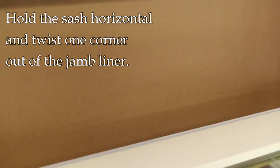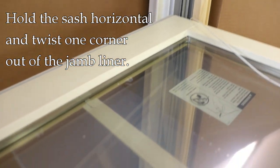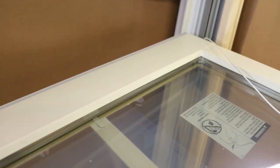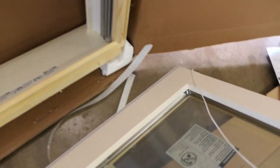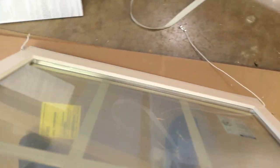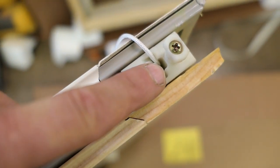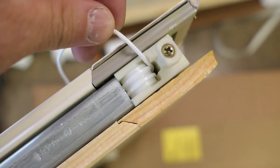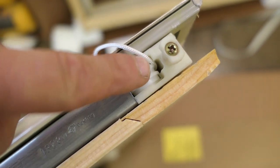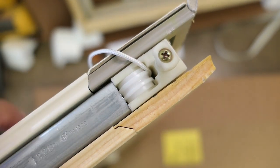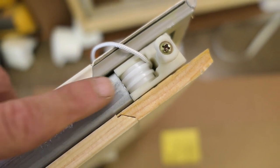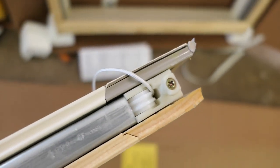Once I get these strings removed from the side of the jams, then I can take the whole sash out. I'm holding the camera while trying to do this. To get the sash out, once those strings are loose, you just twist the sash to one side.